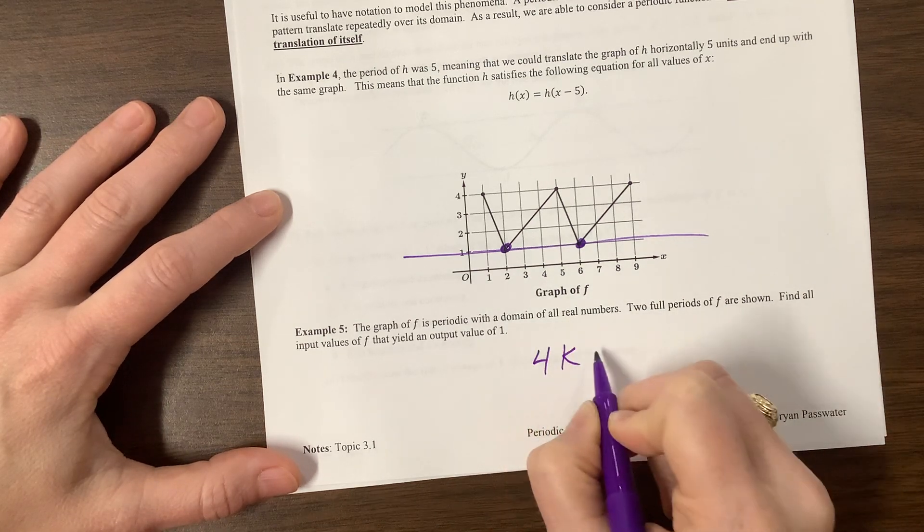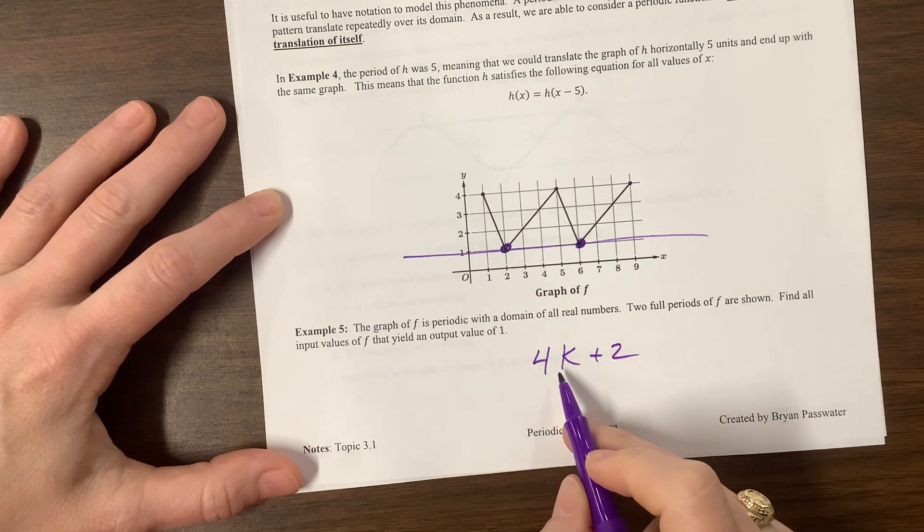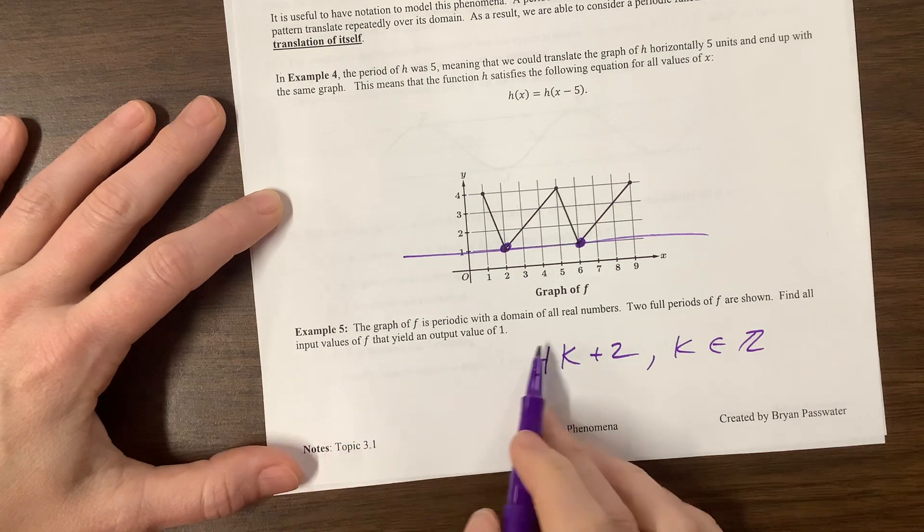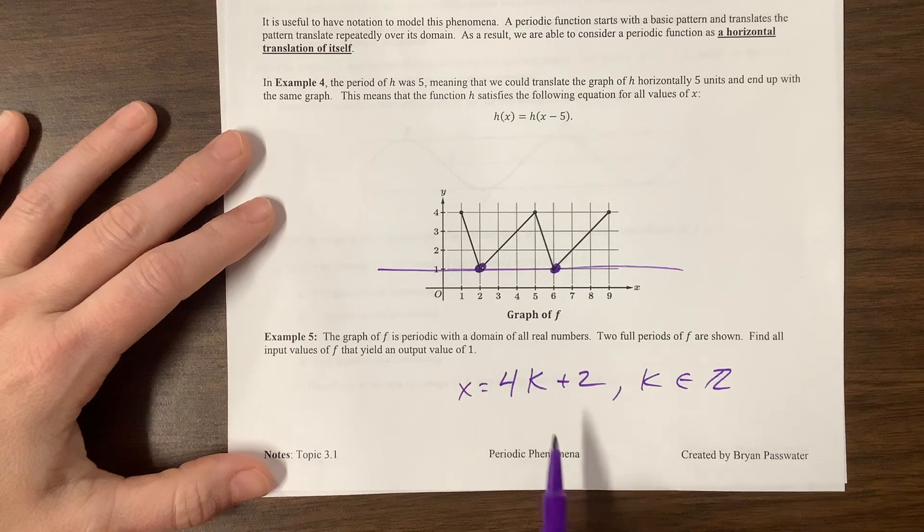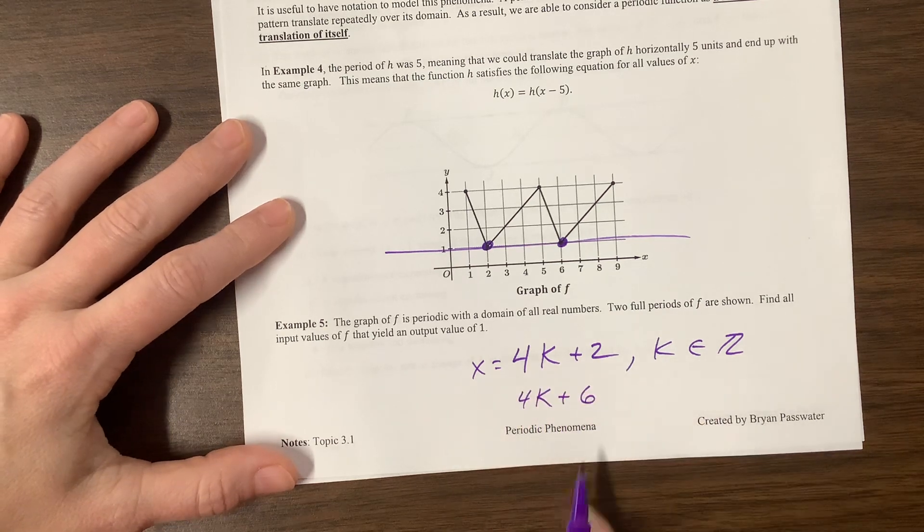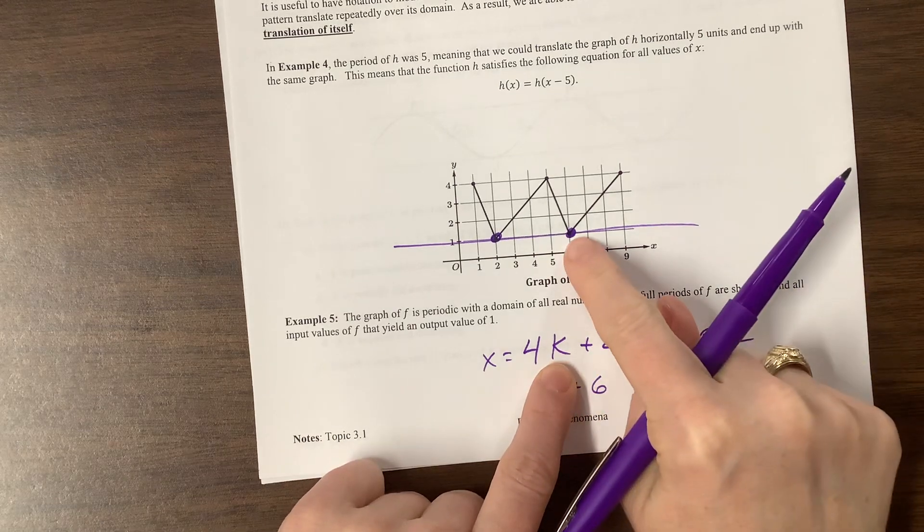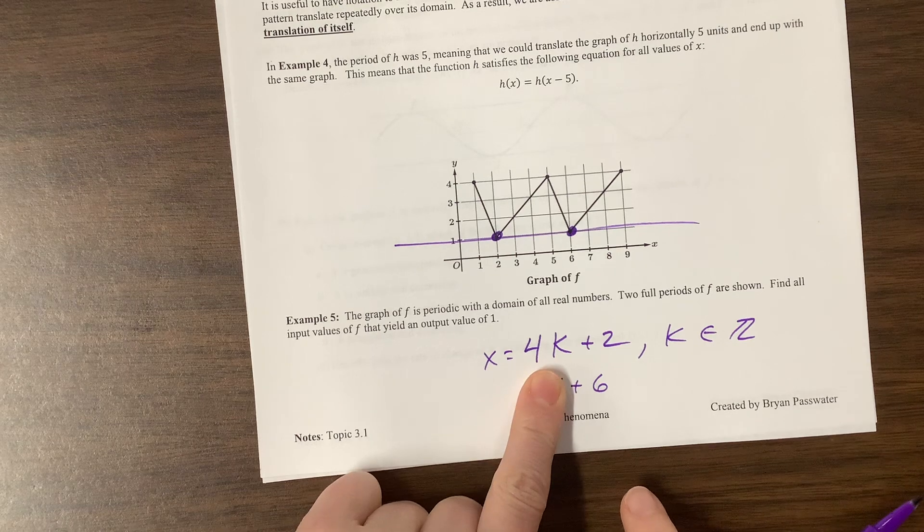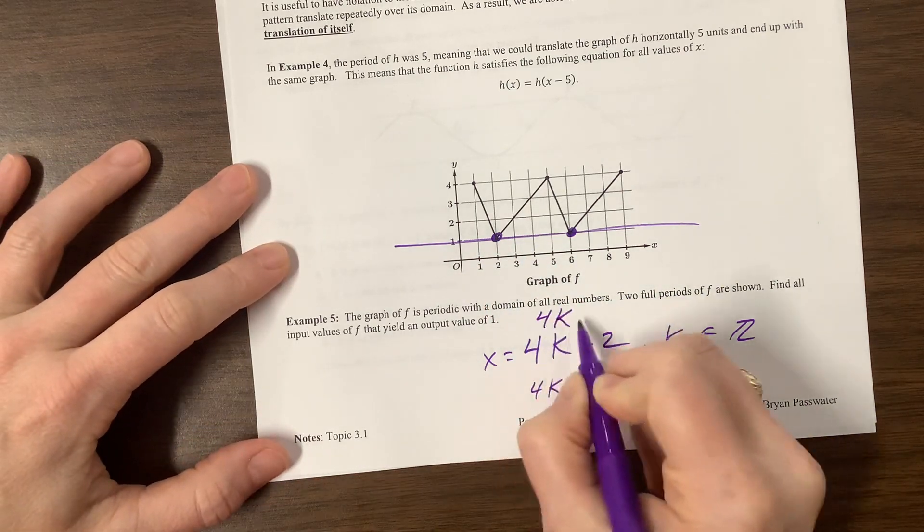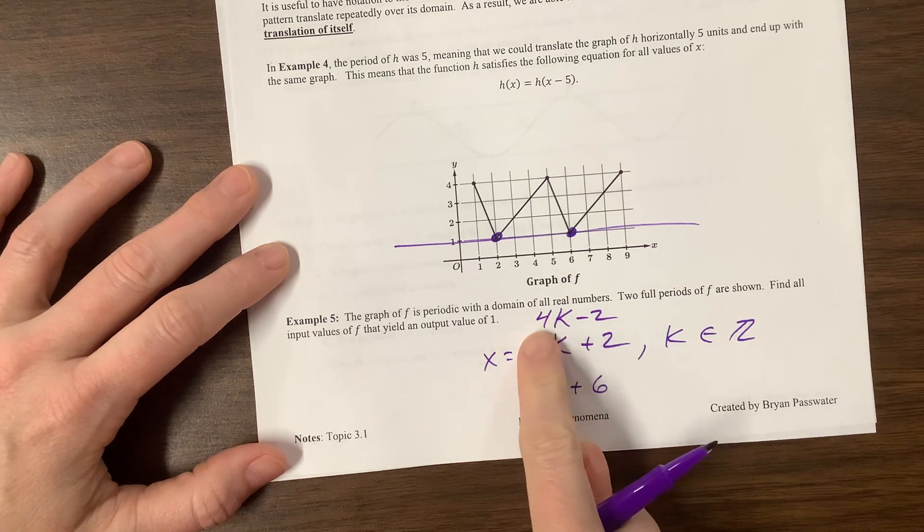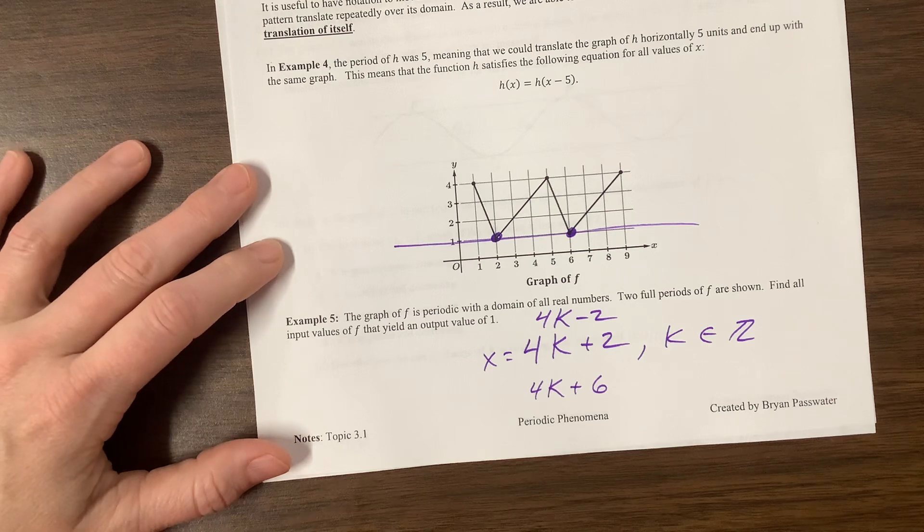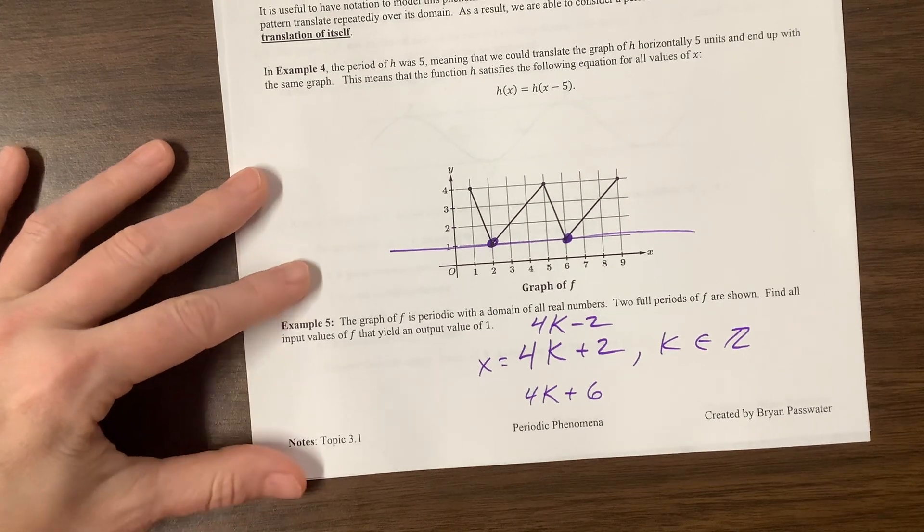So it's just 4K plus 2. We'll generate this first 2. When I plug in, where K is an element of the integers. Find all values, input values that lead to it. So we could say X equals, but I don't know that we have to. What else was I going to say about that? That's not the only way to write this equation. I could have said 4K plus 6. If I plug in, so notice on this one, if I plug in 1, I get 6. On this one, if I plug in 0, I get 6. So they're both going to, if I plug in negative 1, now I'm at 2. I could have said, I could also say 4K minus 2. Because now if I plug in 1, 4 times 1 is 4 minus 2 is 2. This would also, so any of these are reasonable ways to answer that question. There are infinitely many ways to answer that question, but not all of them are so reasonable.